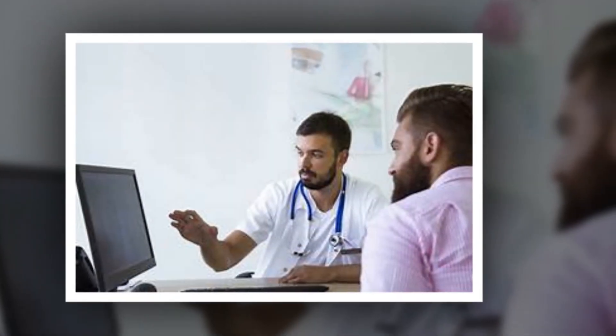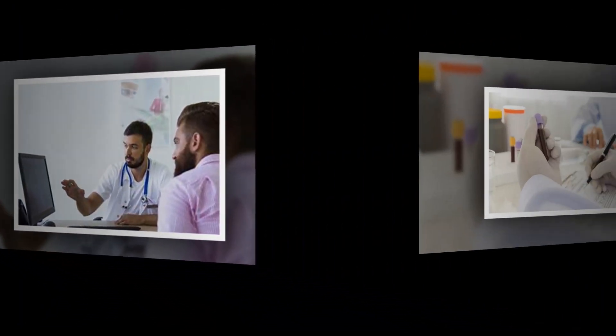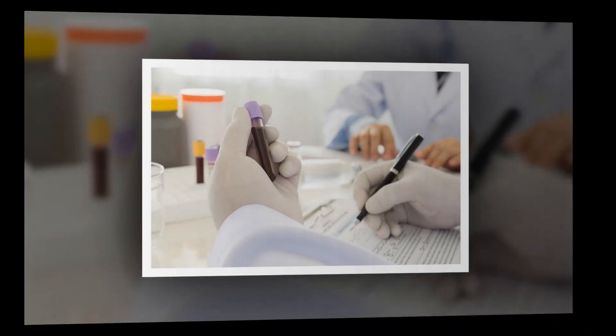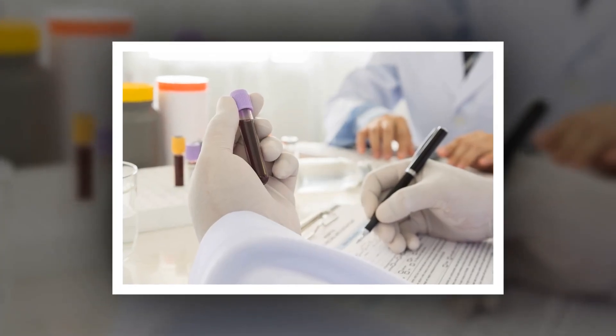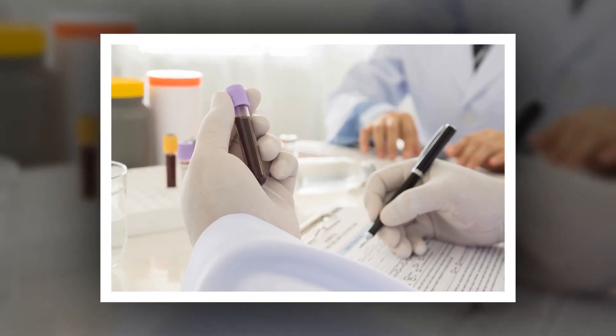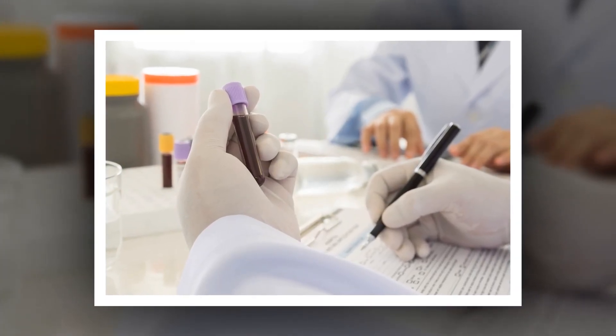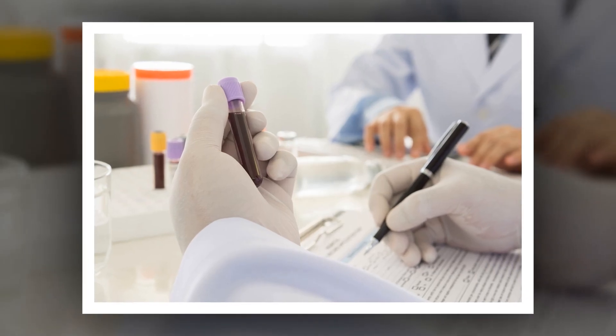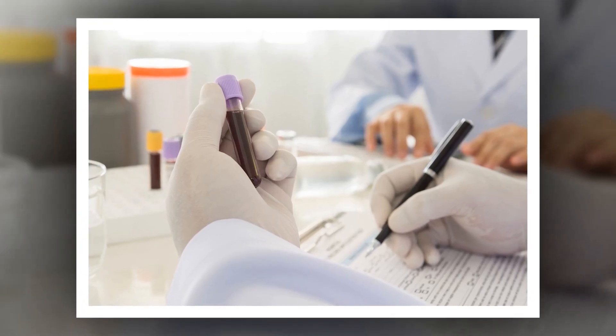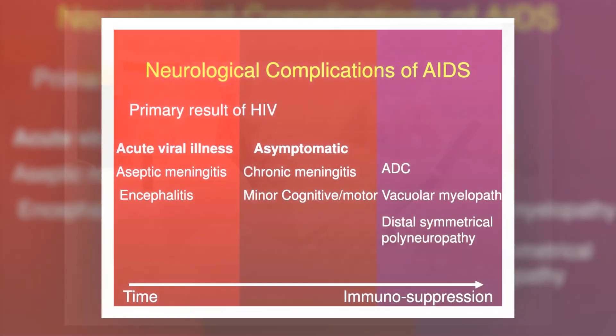HIV opportunistic infections take advantage of your body's weakened defenses. Germs like bacteria, viruses, fungi, and parasites cause these infections. Better HIV medications have kept these infections at bay for many, but there's still a small chance you may catch one. If you're not taking these medications, or your condition has advanced to AIDS, your risk is higher. Common opportunistic infections include the following.